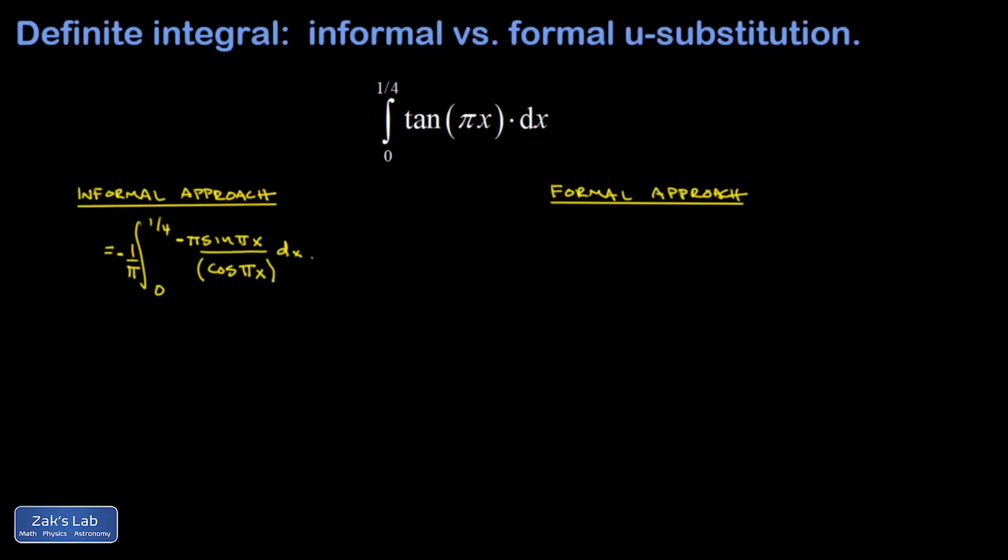Anytime I have one over a thing multiplied by its derivative, I recognize that as the chain rule operating on that expression in the denominator. And I still need to evaluate this across the limits of integration. So I have negative one over pi times natural log of the absolute value of cosine pi over four for the upper limit.